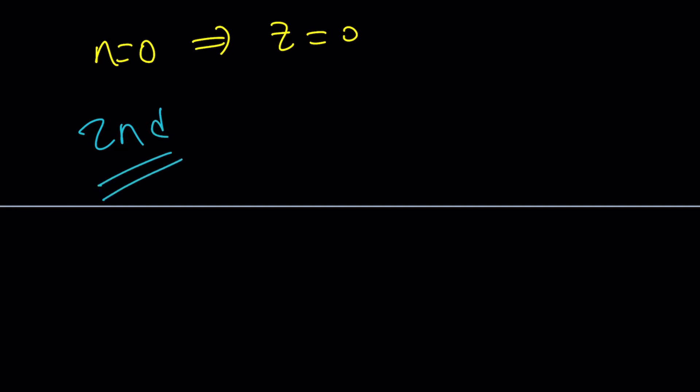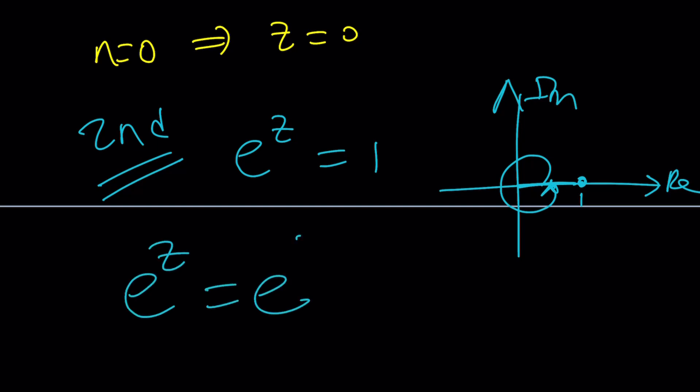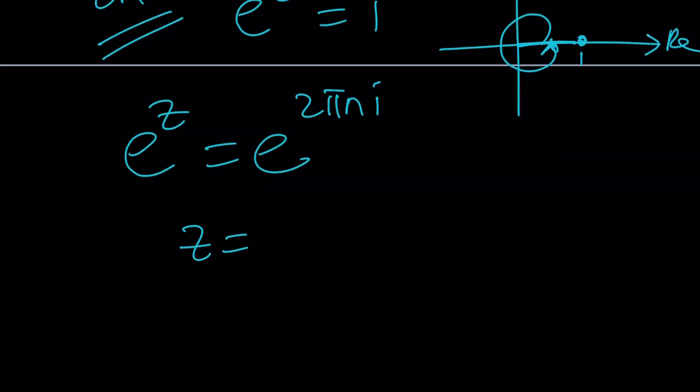So we have E to the Z equals one and we're trying to solve for Z. Remember, in the argand plane, one can be expressed on the real axis as this number. Its modulus is one. And the angle, the argument is zero or two pi. Again, multiples of two pi. So we can write one as E to the power two pi n I. And from here, Z becomes two pi n I. And this brings us to the end of the video.